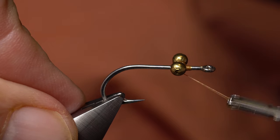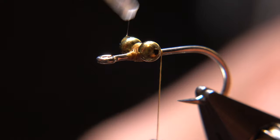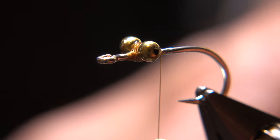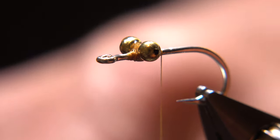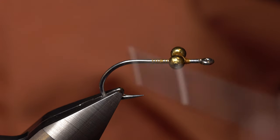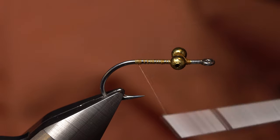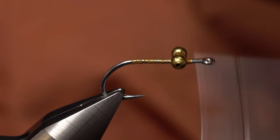Those eyes aren't going anywhere. But to make absolutely sure they don't end up spinning around the hook shank, Peter applies a liberal coating of Sally Hansen's hard-as-nails. With the eyes completely secured, take thread wraps rearward to the start of the bend, and then back up the shank, leaving your tying thread a short distance behind the bead chain.